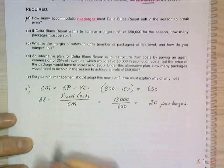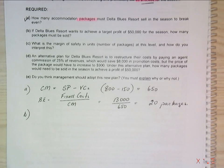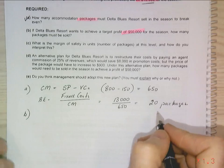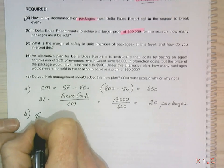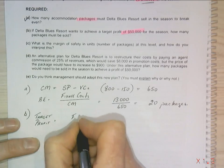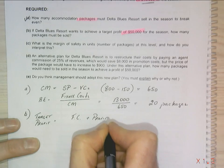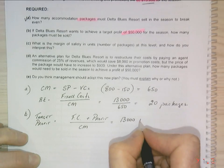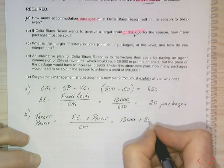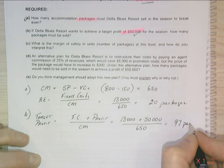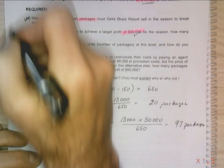Now question B asks: if Delta Blue wants to achieve a target profit of $50,000 for the season, how many packages must it sell? So my target is $50,000 for the season. Now we've already worked out that 20 packages is break even. So target profit equals my fixed cost plus my profit over my contribution margin. So in this case it's my fixed cost of $13,000 plus my profit of $50,000 divided by $650, and this equals 97 packages. And that takes care of B.